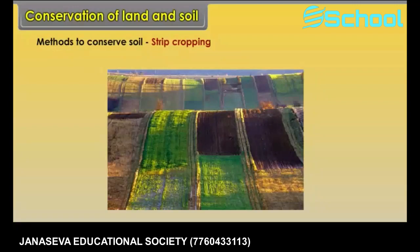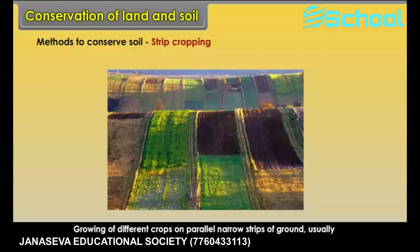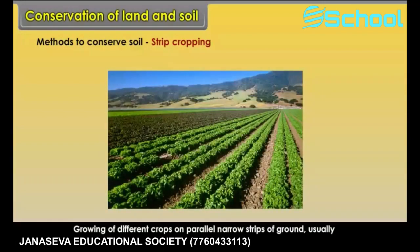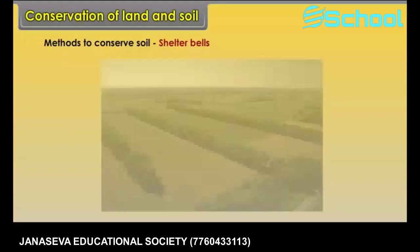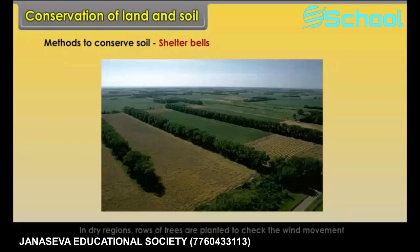Strip cropping is the growing of different crops on parallel narrow strips of ground, usually following the contour patterns. Shelter belts — in dry regions, rows of trees are planted to check the wind movement for protecting soil cover.